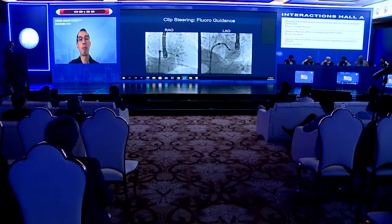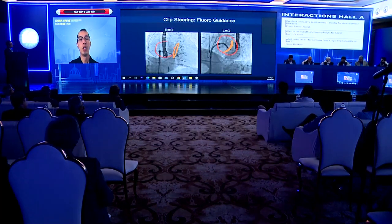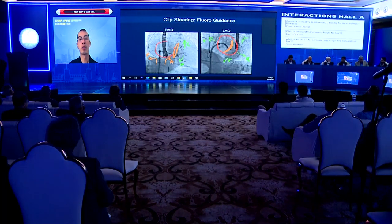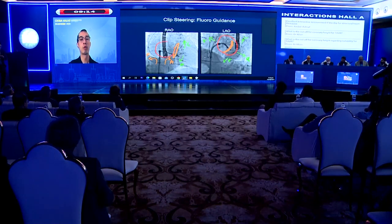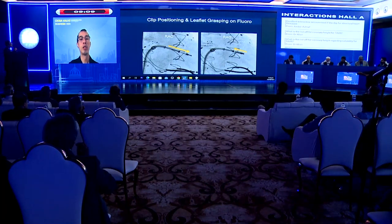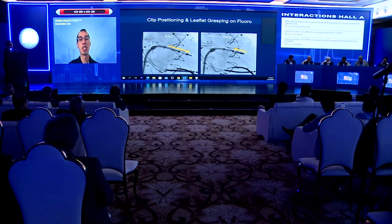Fluoroscopy is also important for MitraClip guidance. On the RAO view, the annulus is visible; on the LAO view it faces directly, allowing identification of medial versus lateral and anterior versus posterior orientation of the transeptal and steering catheter. During grasping, using an atrial projection allows echo to show clip orientation — confirming no parallax of the clip arms. This has been published in the MitraClip sky ebook to maintain proper orientation, as fluoroscopy provides much better spatial definition than an atrial probe alone.